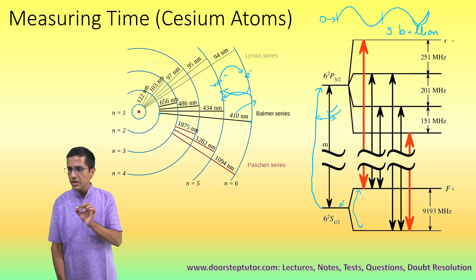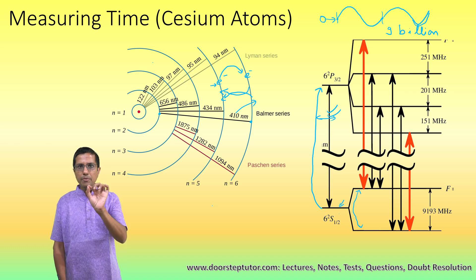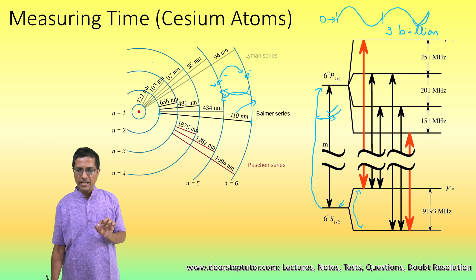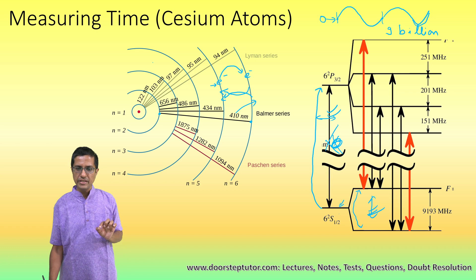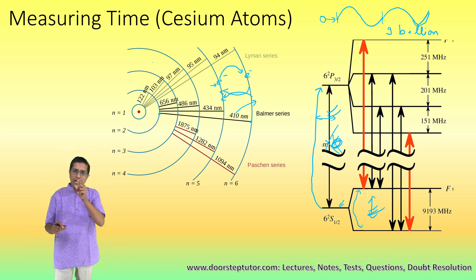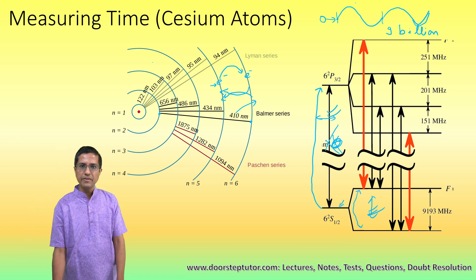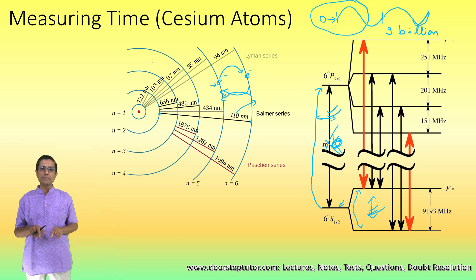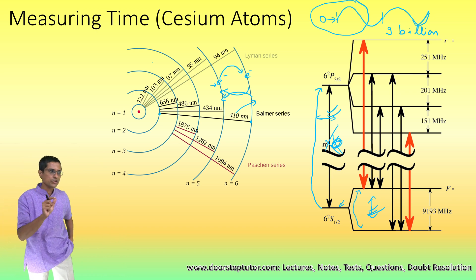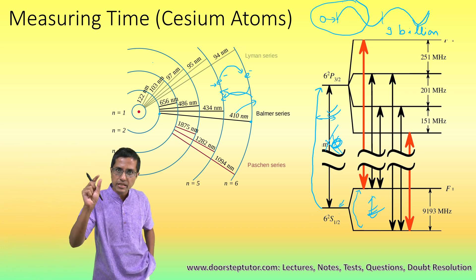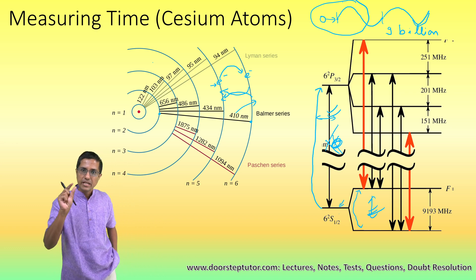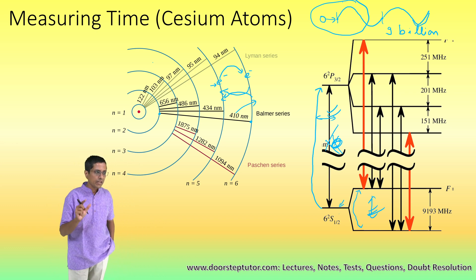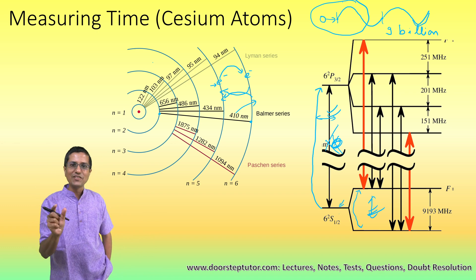In the case of the cesium atom, the jump we are talking about is between these two hyperfine levels — not the large jump, but the small jump between the hyperfine levels. It is this jump which emits the particular frequency we use: the frequency of radiation caused by the electron jumping between the hyperfine levels of the cesium atom.